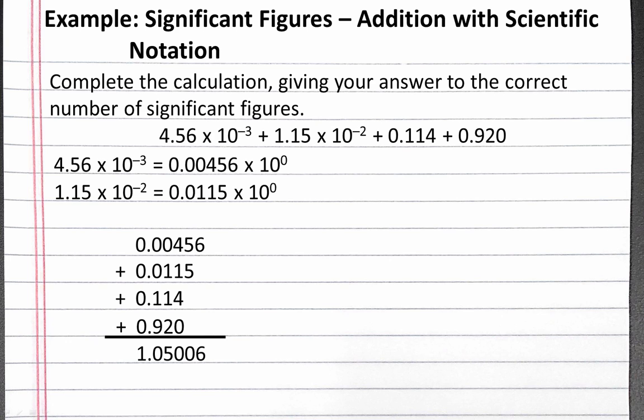Now we have to determine how many significant figures we can keep. For addition and subtraction, we have to look with respect to the decimal point which number is least significant. Both our 0.114 and 0.920 are represented to the nearest thousandths, which means our answer can only be represented to the nearest thousandths. So our answer is 1.050.